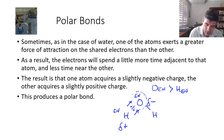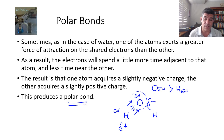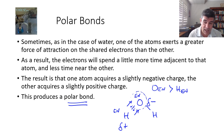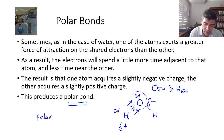Because we know about electrostatic attraction between oppositely charged particles, there is a polarity that's created in this case, and we call this a polar bond, or a polar covalent bond.